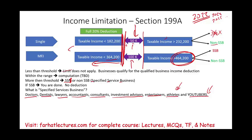Think about an athlete — same concept. An entertainer, actor, or actress — same concept. My reputation, my effort, my skills, my personal initiative is the business. Therefore, if I don't exist, it doesn't exist. So what we are saying is: once an SSB business earns above a certain amount, they no longer qualify for this deduction. If you're an athlete or YouTuber not making a lot, the deduction is allowed. The numbers change every year.